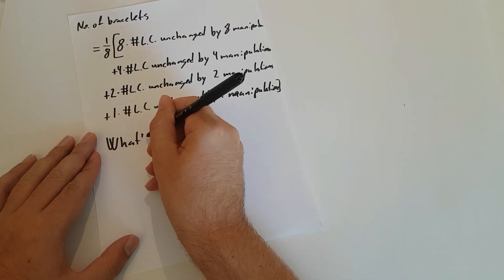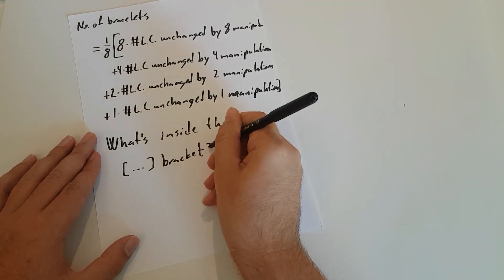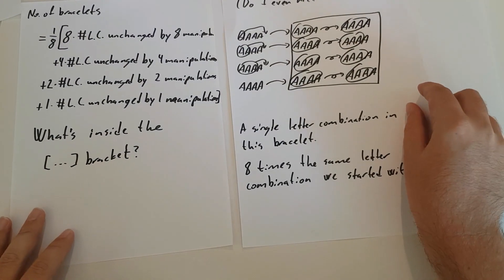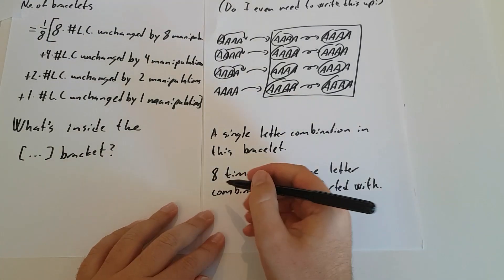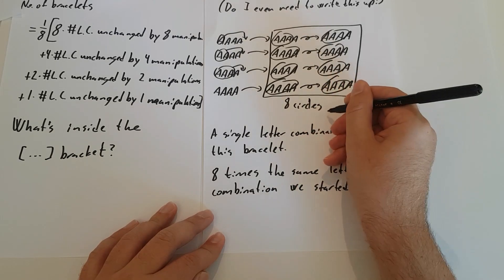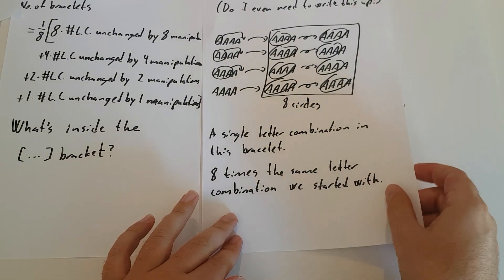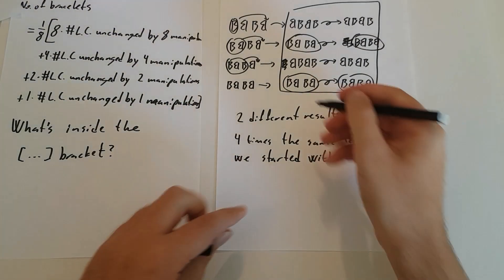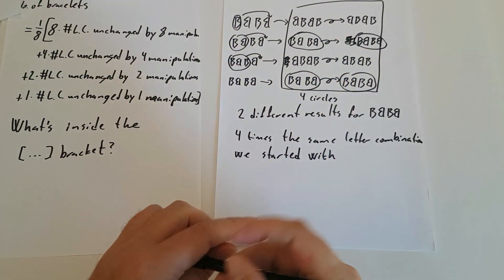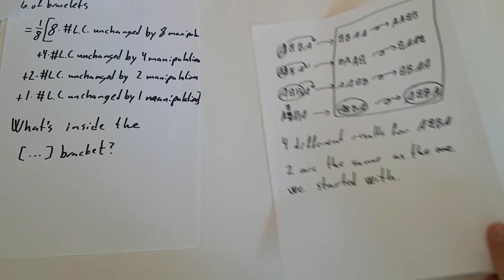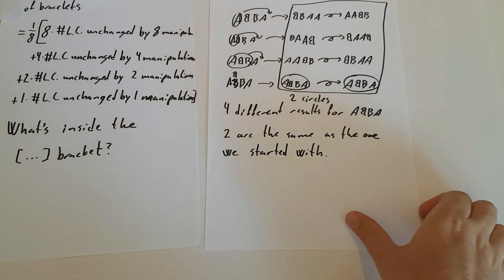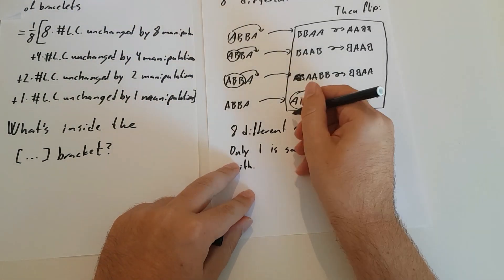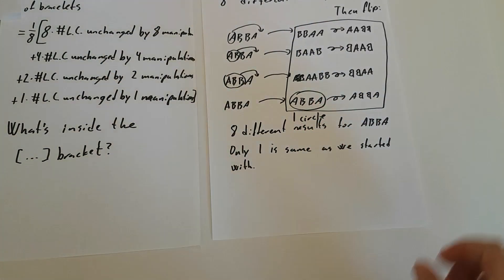What are these things? Eight times the number of letter combinations unchanged by eight manipulations — here is such a combination, and what are there eight of? There are eight circles. Four times the number unchanged by four manipulations — what are there four of? Four circles. Two times the number unchanged by two manipulations — what are there two of? Two circles. And one times the number unchanged by a single manipulation — what is there one of? A circle. So what we count in this bracket is the total number of circles in all 81 boxes.